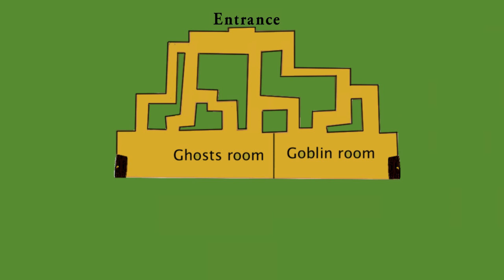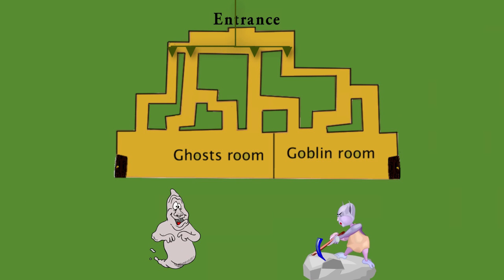Suppose a person enters this maze at the top and makes a decision randomly as to which path to follow. We want to construct a tree diagram to determine the probabilities of each of the paths that lead to the ghost room and the goblin room.